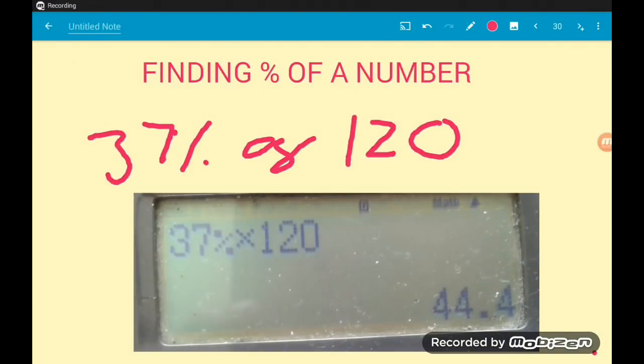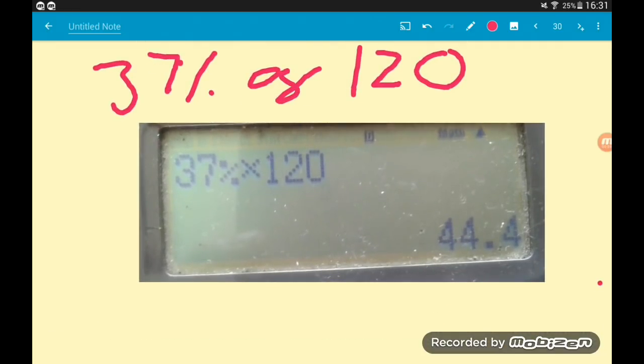Next we are finding percentages of a number. To be honest I've always done this by using decimal equivalents, but your calculator can do it for you in terms of percentages. Say that we want to do 37 percent of 120, we put 37 in, press the percent button, times 120, press equals: Bob's your uncle, 44.4. The way I've always done that is turning it into a decimal, so I would do 0.37 times 120 to get the same answer. But if you're not confident doing that, this percentage method will always work.